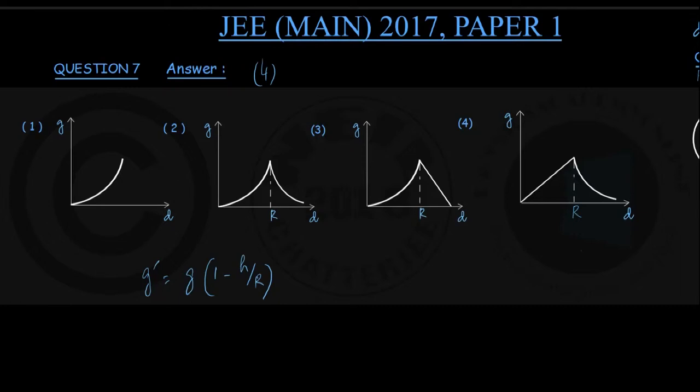Now in this formula let me show you the figure quickly. This is the earth, this is the earth center, and you go to a depth of h below the earth surface. Radius of the earth is r and therefore the distance of this point from the earth center, that they are calling as d.